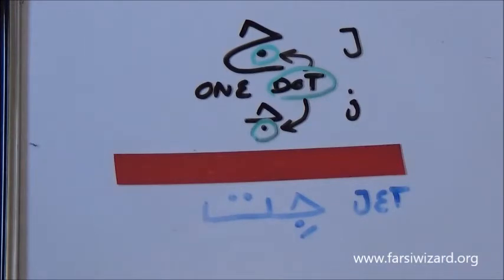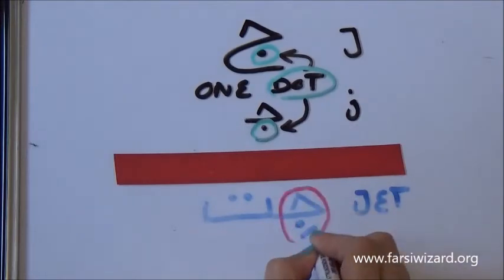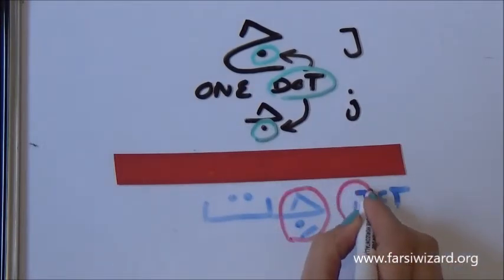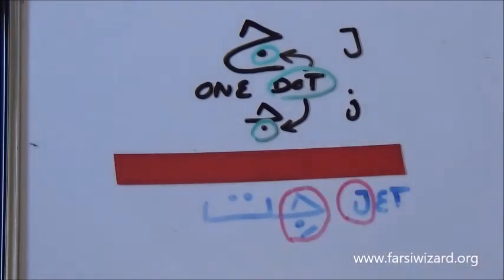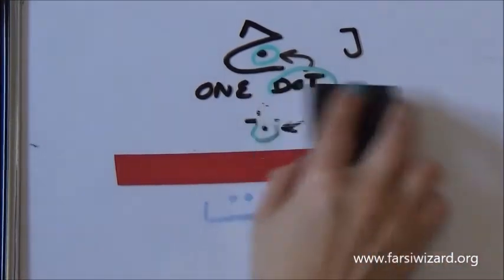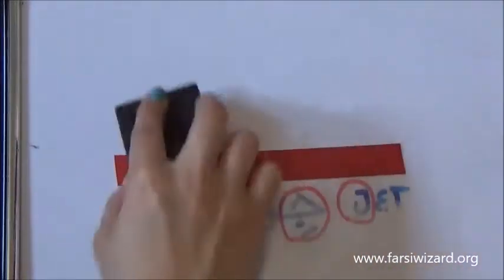In Farsi, of course, we do not write the short vowels, but that's another lesson. For now, just focus on the first letter in this word. As you can see, this is the letter J, the sound is J, as you can see in the word JET, which actually means JET, like a JET airplane. So, very easy. J has one dot and Jim also has one dot. Now, we're going to go to the next one.